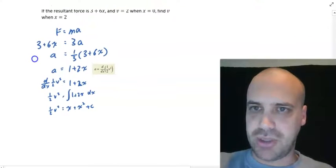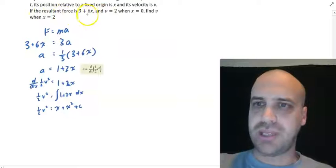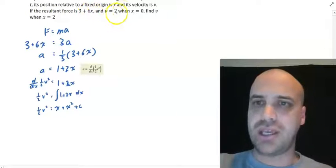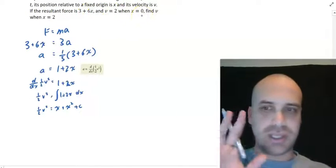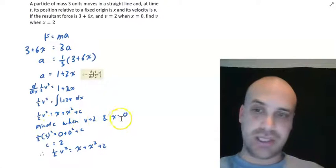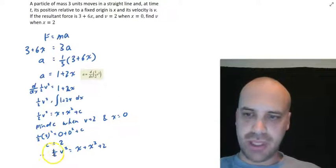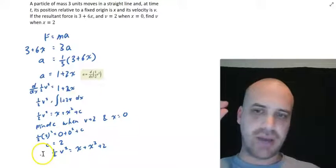Now, it's tempting to muck around here, but let's deal with that c now. So, let's look back at the question. It says, if the resultant force equals 3 plus 6x, v equals 2 when x equals 0. So, we can sub that in and find c. All right. So, find c when v equals 2 and x equals 0. Subbing that in, we get a c value of 2, which means we can get this equation here. Half v squared equals x plus x squared plus 2.